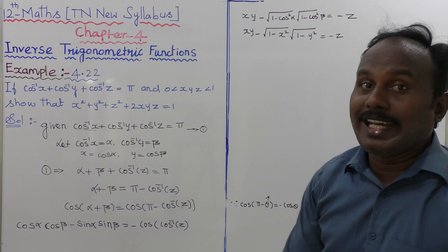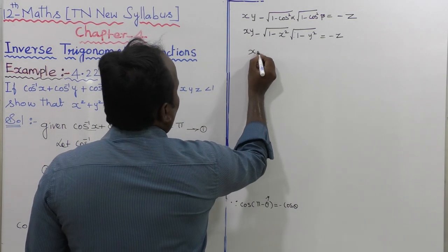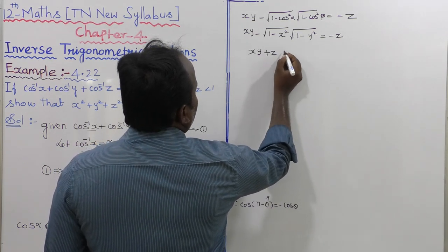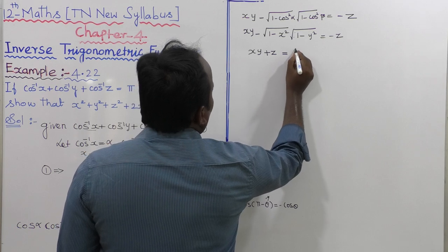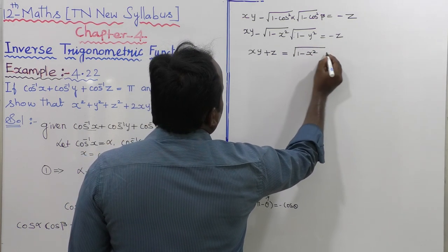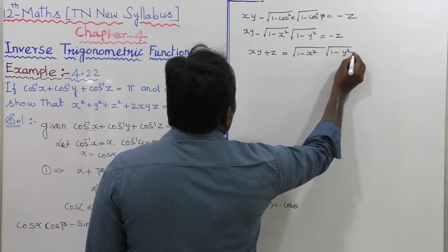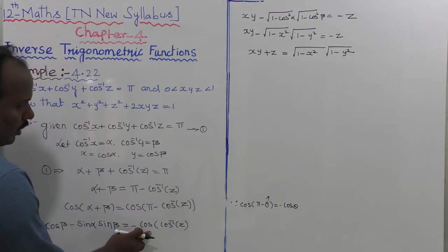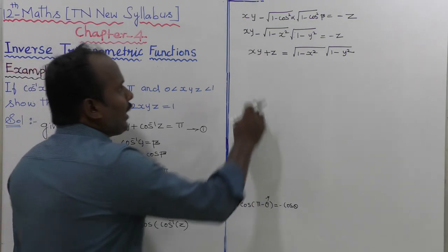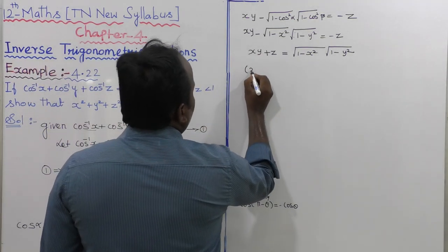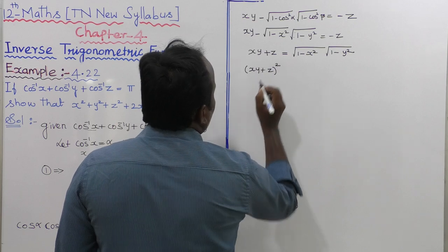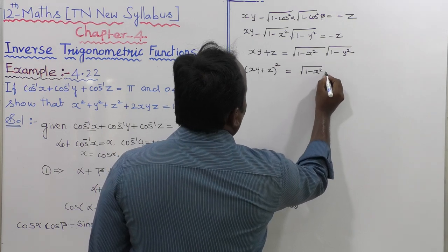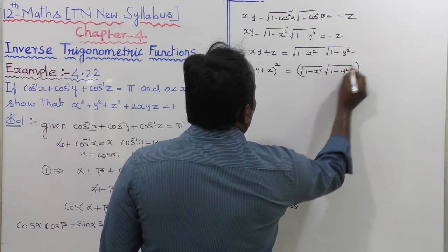Moving the second term to the right side: xy + z = √(1 − x²) · √(1 − y²). Now squaring both sides: (xy + z)² = (√(1 − x²) · √(1 − y²))².